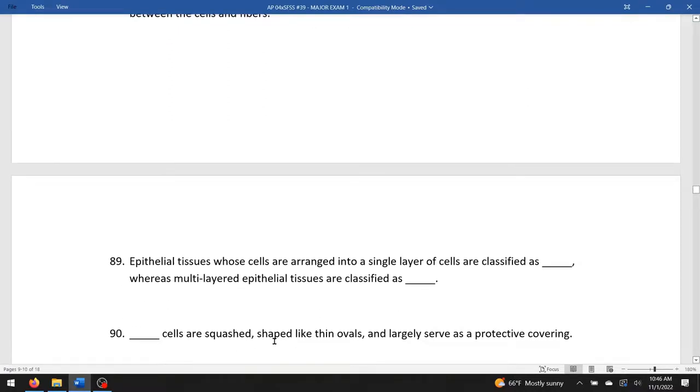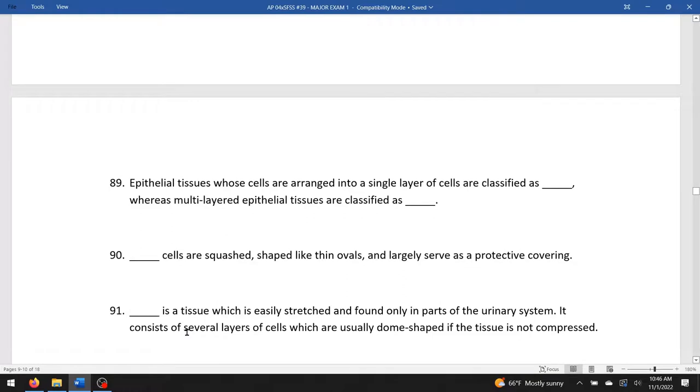Blank cells are squashed, shaped like thin ovals, and largely serve as protection. Squashed reminds us of squamous. Blank is a tissue which is easily stretched and found only in parts of the urinary system. That should be a hint. The only one we talked about that's only found in the urinary system was transitional epithelium.